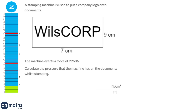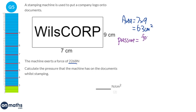To find the pressure we need the area and the force. The area is 7 times 9 which is 63 centimetres squared. The force is given in the question as 2268. Using the formula pressure equals force divided by area: 2268 divided by 63 equals 36. So the answer is 36 newtons per centimetre squared.